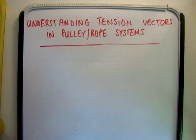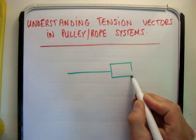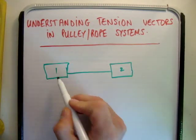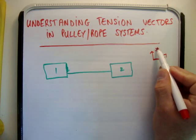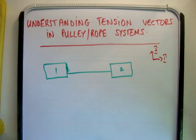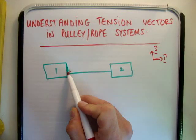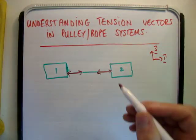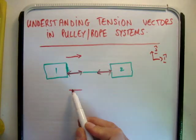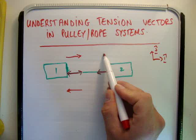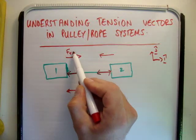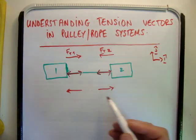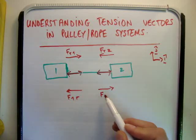To show what we're talking about: if I have a rope stretched between two blocks, I'll call this block number two and this block number one. If we look at the forces in the i-hat unit vector direction — the j-hat vectors cancel out on the ground — we have two forces on each end. These are Newton's third law pairs: the force of the rope on block one, the force of the rope on block two, the force of block one on the rope, and the force of block two on the rope.